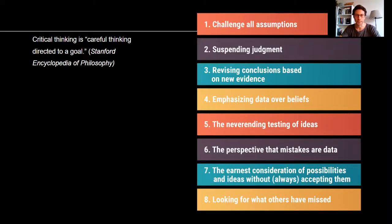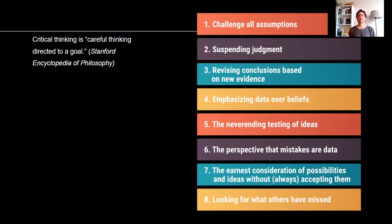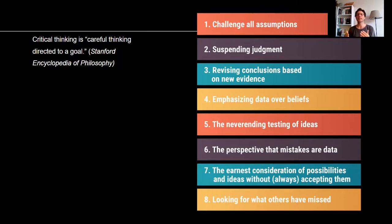Here are some steps for critical thinking. For a thinking or reasoning to be critical, first of all you have to challenge all assumptions. When you are making arguments or reaching a conclusion, you have multiple assumptions. In order to think critically, you should determine those assumptions and challenge them — question them and think of possibilities that these assumptions might be false or not as strong as you think.